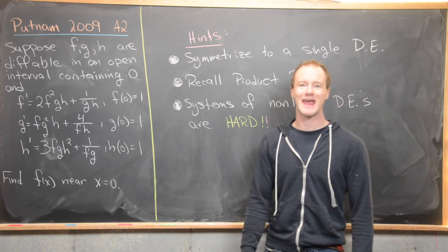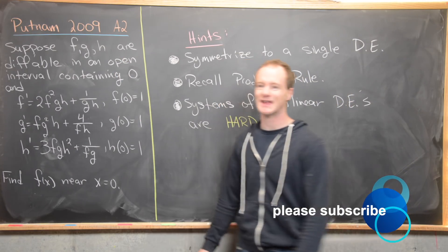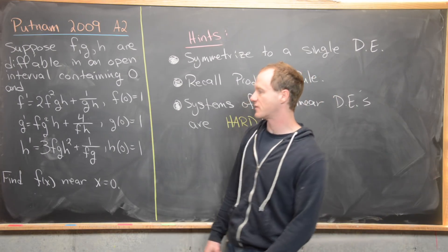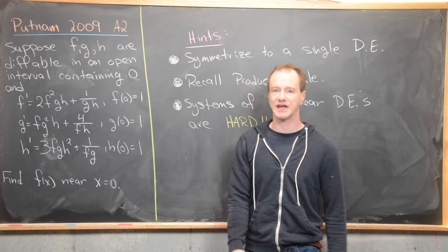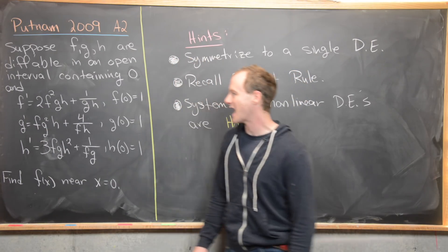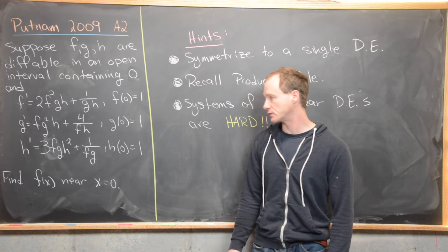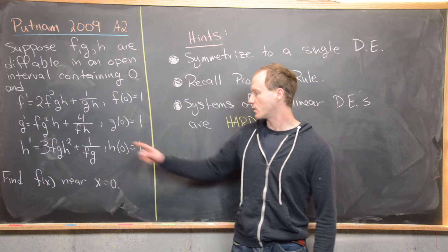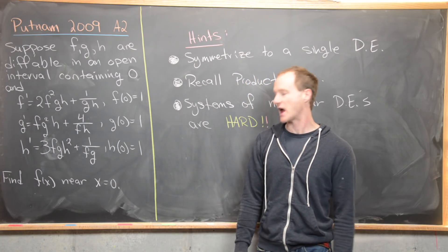Here we're going to look at a solution to problem A2 from the 2009 Putnam exam. We want to suppose that f, g, and h are differentiable functions on an open interval containing 0, and consider this system of differential equations. We have f prime equals 2f²gh plus 1 over gh, with f(0)=1; g prime equals fg²h plus 4 over fh, with g(0)=1; and h prime equals 3fgh² plus 1 over fg, with h(0)=1. The goal is to solve for f(x) near x equals 0.